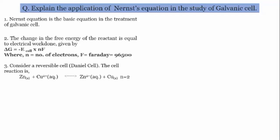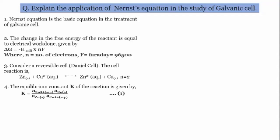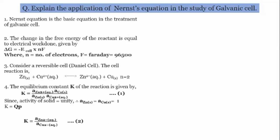Here the number of electrons n = 2, because both copper and zinc carry a 2+ charge. The equilibrium constant K of the reaction is given by activity of products divided by activity of reactants: K = [a(Zn²⁺ aq) × a(Cu solid)] / [a(Zn solid) × a(Cu²⁺ aq)]. Since the activity of solids is always unity, activity of Zn solid = activity of Cu solid = 1. Therefore K = QP = a(Zn²⁺ aq) / a(Cu²⁺ aq). This is equation number 2.